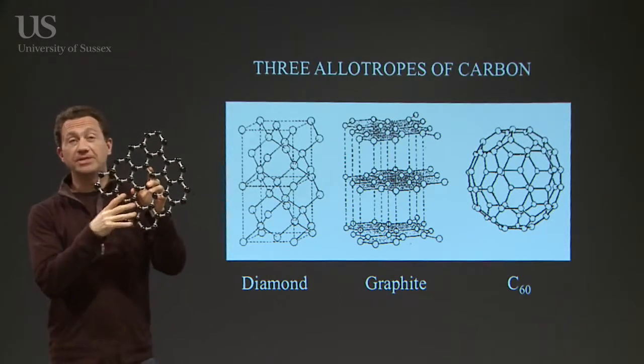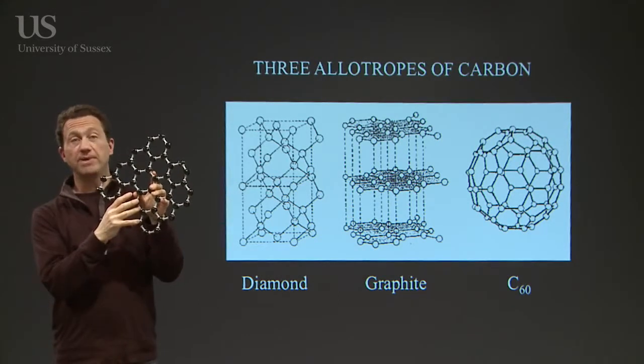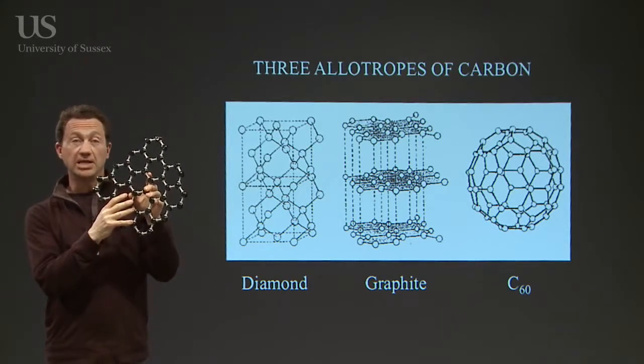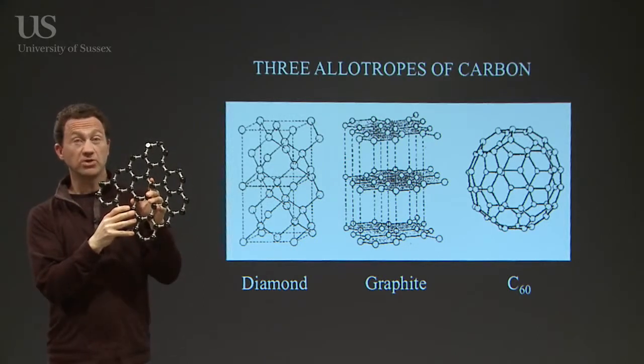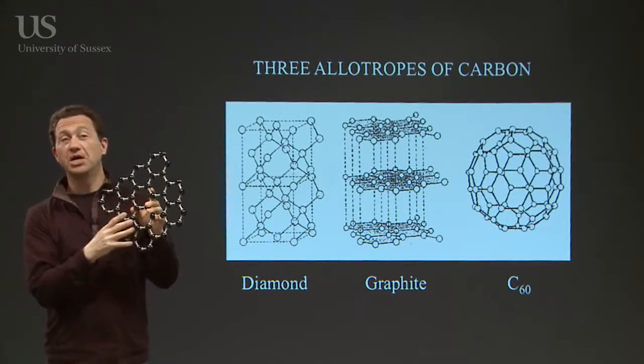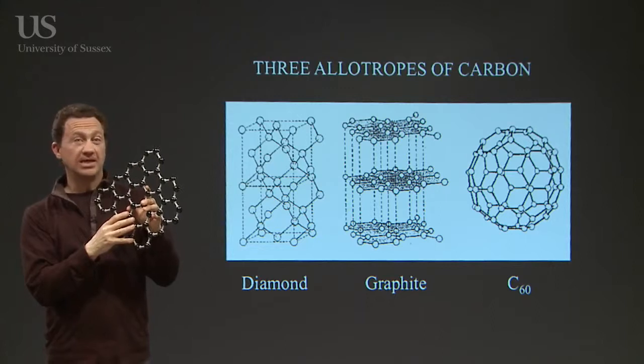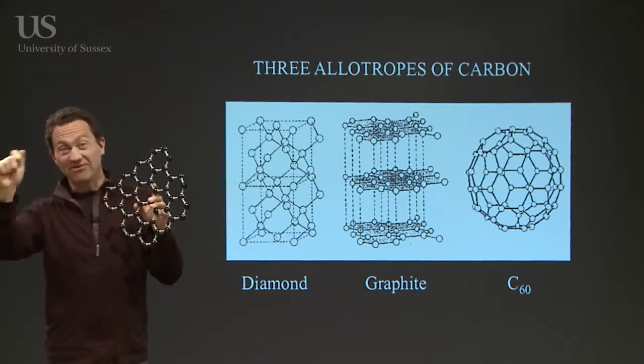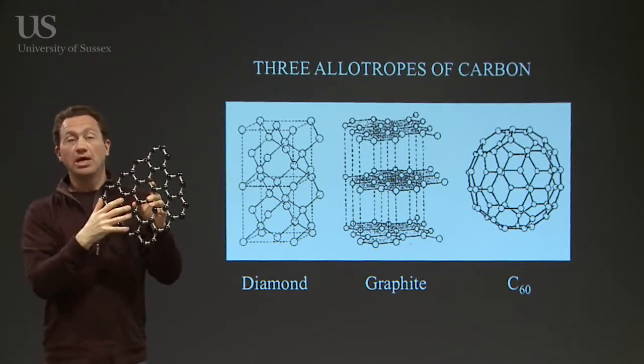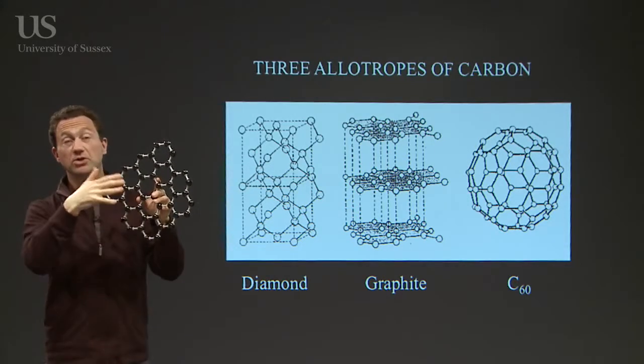Normally we think of carbon, the two allotropes of carbon that we all know about are diamond and graphite. In diamond, each atom is surrounded by four neighbors in a sort of tetrahedral structure, a very strong structure. But the other form of carbon that we know about is graphite, the sort of thing that you draw with, the stuff in a pencil is graphite. It's sheets of atoms forming hexagon sheets, one on top of the other.